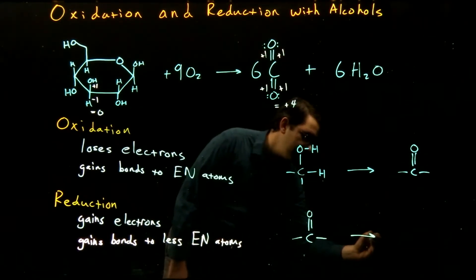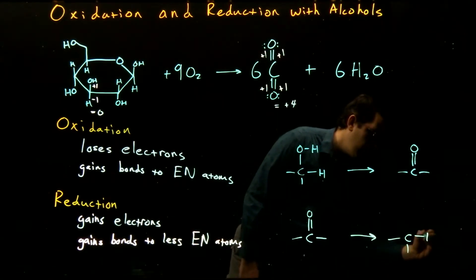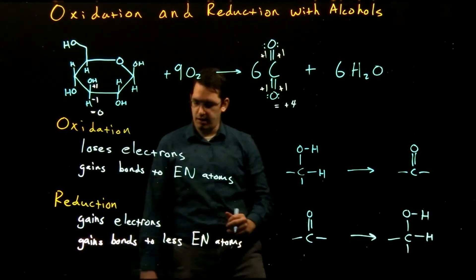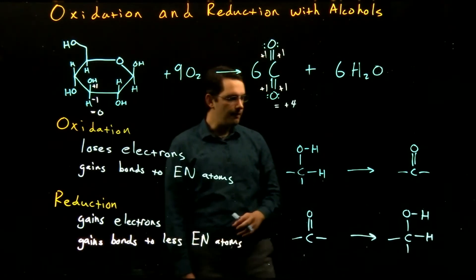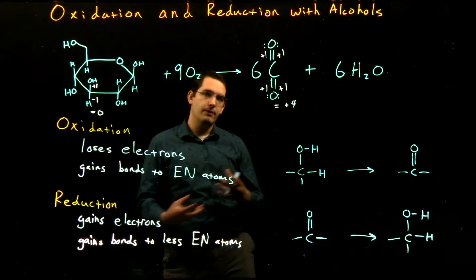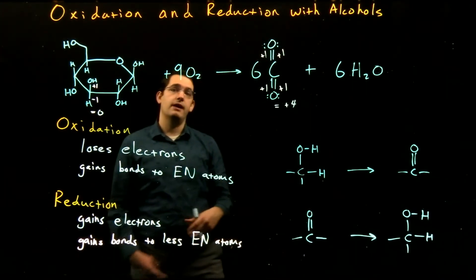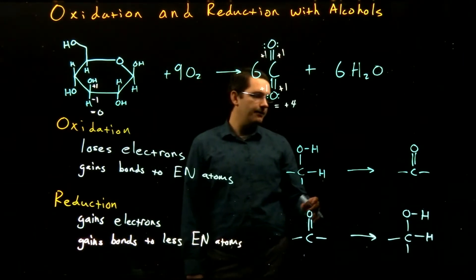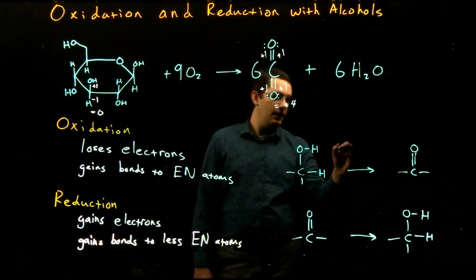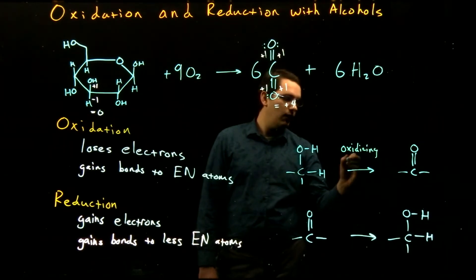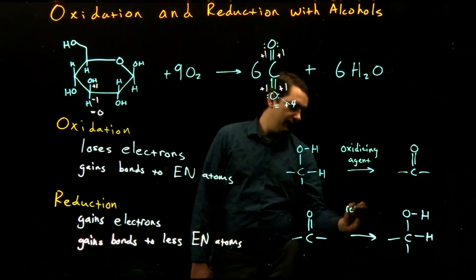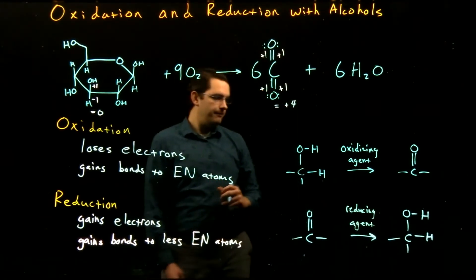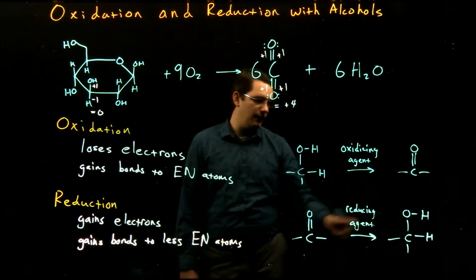We can also take our carbonyl and go in the reverse direction — take a carbonyl and reduce it to create our alcohol. We add on new hydrogens as we eliminate that bond to our oxygen, reducing that carbon by adding bonds to those less electronegative hydrogens. Both of these reactions allow us to convert between different organic functional groups — carbonyl and alcohols. The only thing we need is some kind of oxidizing agent or reducing agent.